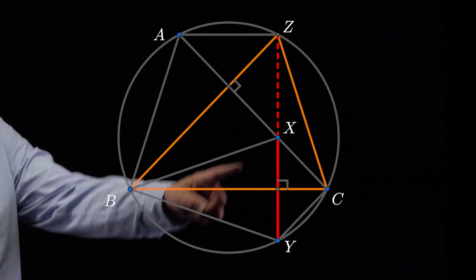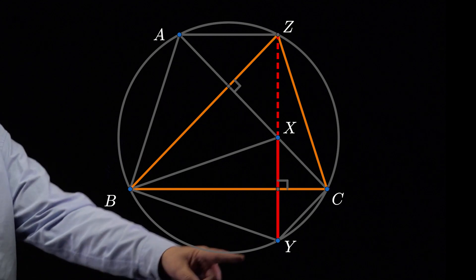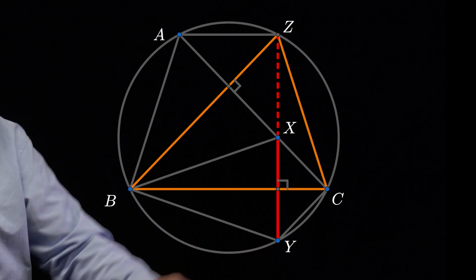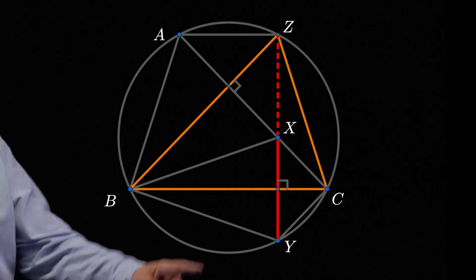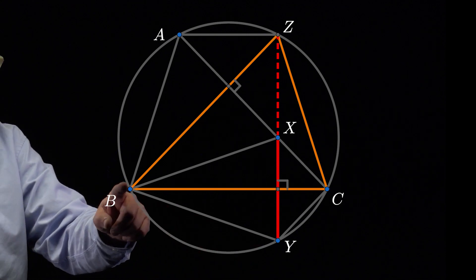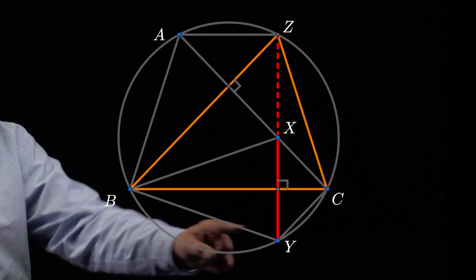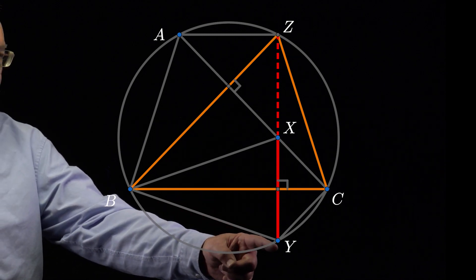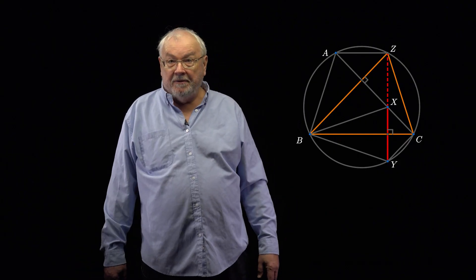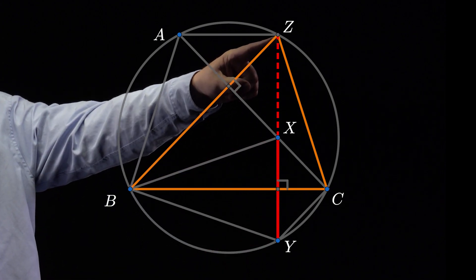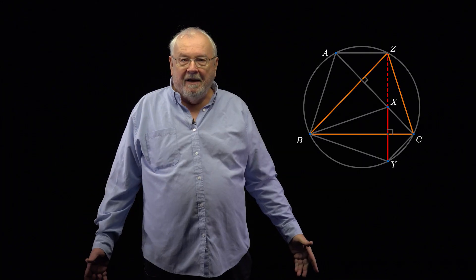Now, X is its orthocentre, so if you reflect X in its side BC, what happens is you land on its circumcircle, which is the same as the circumcircle of ABC. So we've got the point Y down there. Because it's the reflection of X in BC, then, of course, this distance from B to Y is exactly what you want. Now, let's think about this line through Y and X. Well, of course, that's an altitude of this triangle. And so that altitude must pass through the vertex, and everything's done.